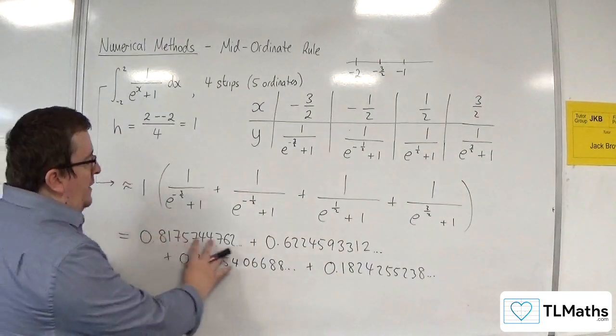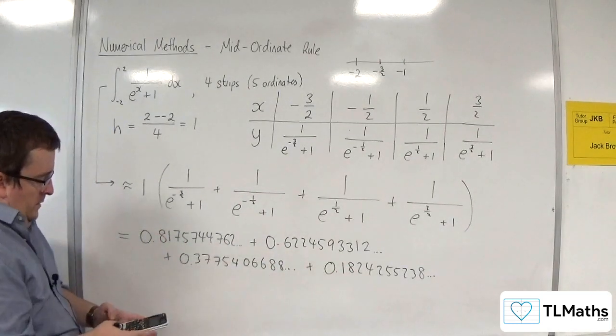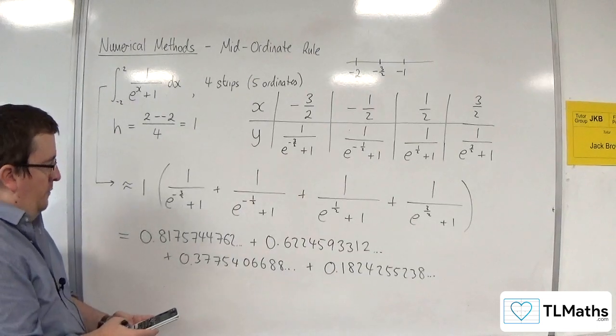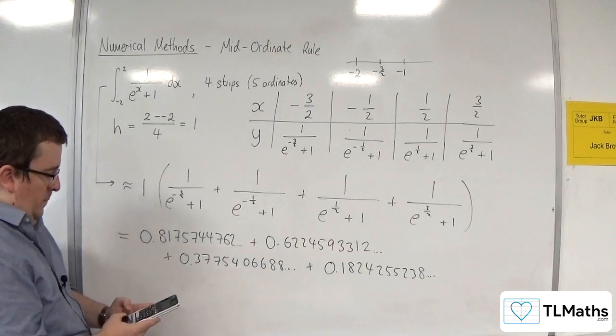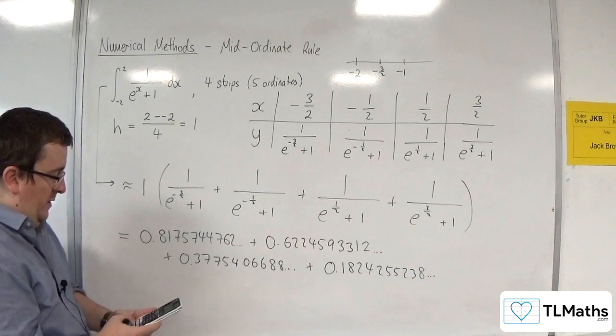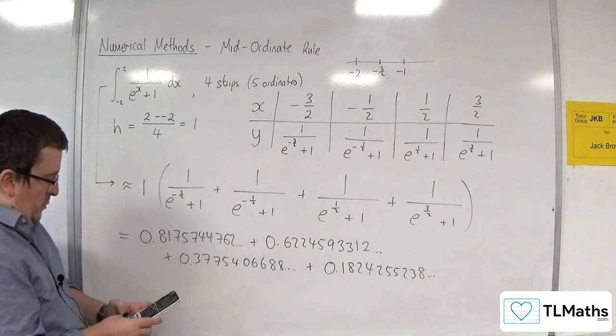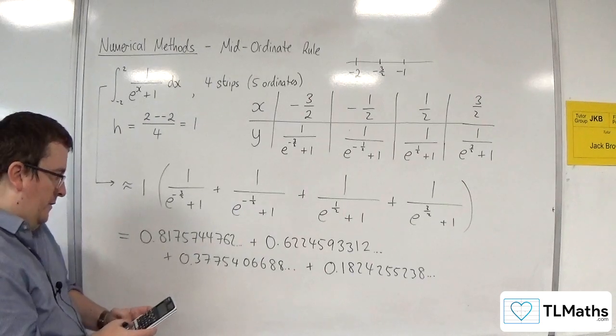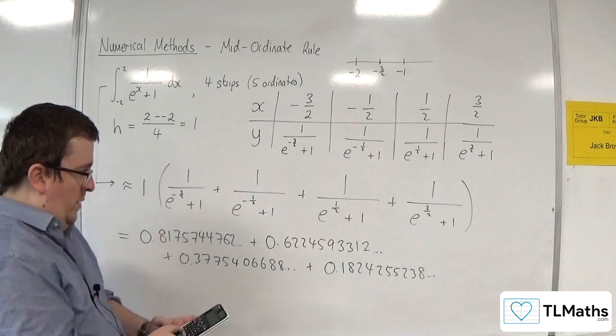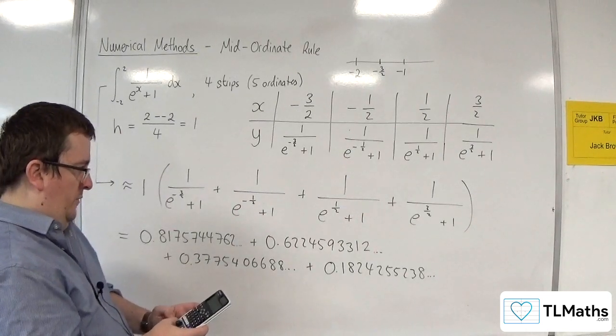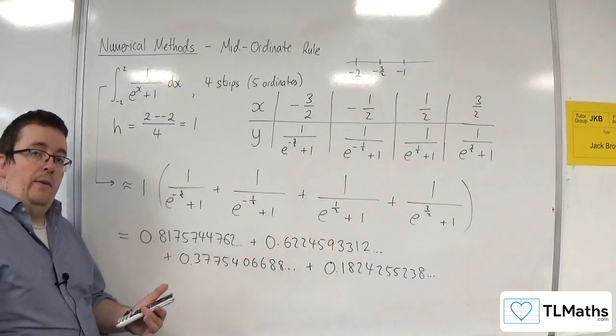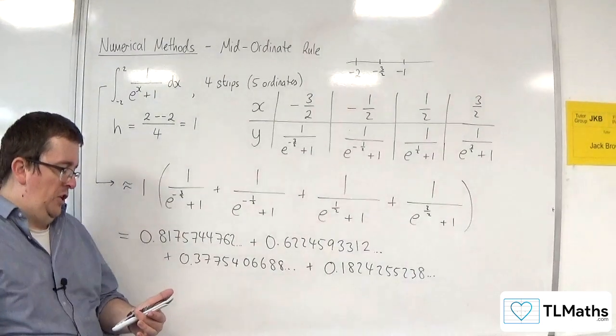So let's add all of these together. So 0.8175744762 plus 0.6224593312 plus 0.3775406688 plus 0.1824255238. And my calculator gives that as equal to 2.